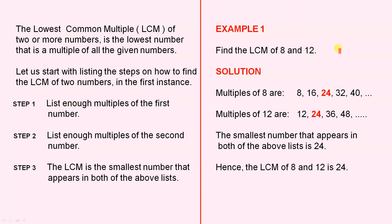Find the LCM of 8 and 12. Solution. The multiples of 8 are these numbers. The multiples of 12 are these numbers. The smallest number that appears in both of the above lists is 24. Hence the LCM of 8 and 12 is 24.